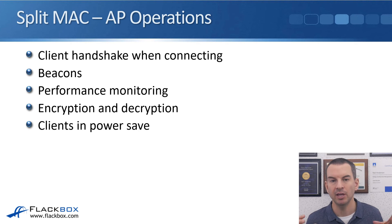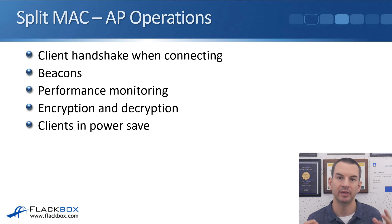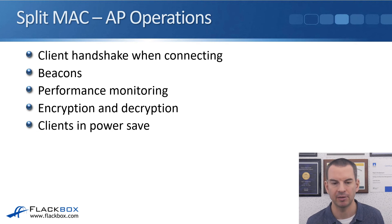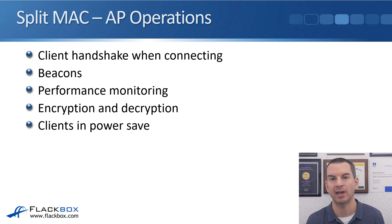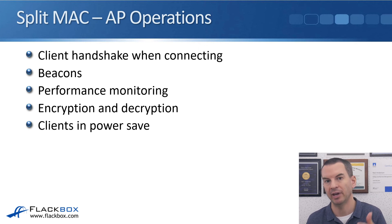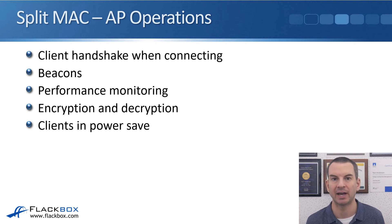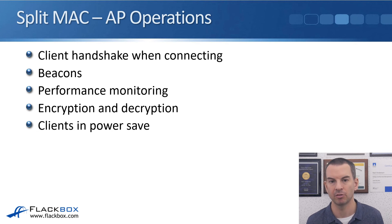The operations handled by the AP include: the client handshake when connecting, beacons where the AP announces information about its WLANs and SSIDs, performance monitoring — where the AP checks quality in its coverage area and sends that information to the WLC for action — encryption and decryption, and communications with clients that are in power save mode.